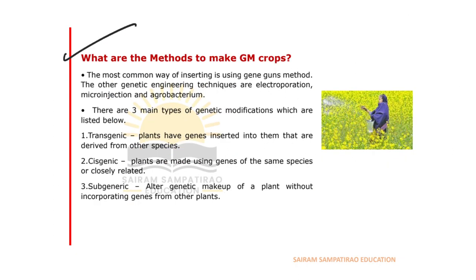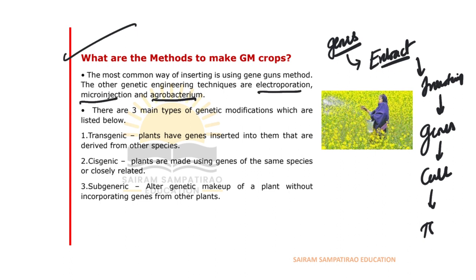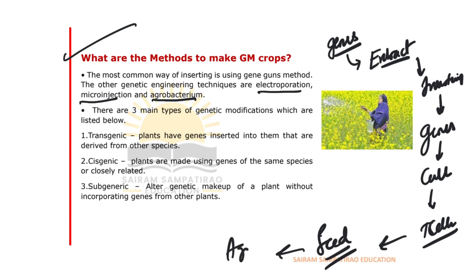In making GM crops, scientists first identify and extract the genes, then insert them using techniques such as electroporation, micro-injection, and Agrobacterium. These techniques send the genes into the cell, which then grows in tissue culture, turning into genetically modified seeds. These seeds are planted in agricultural fields — that is the actual process of making genetically modified crops.